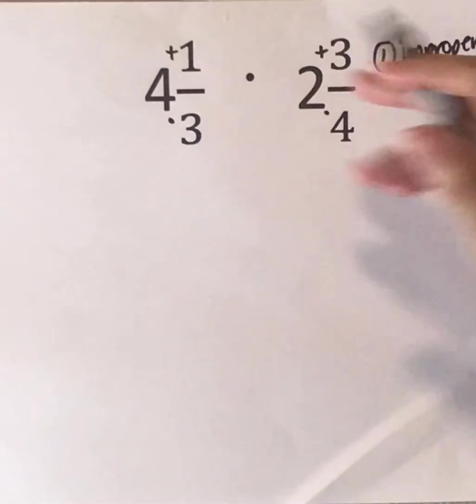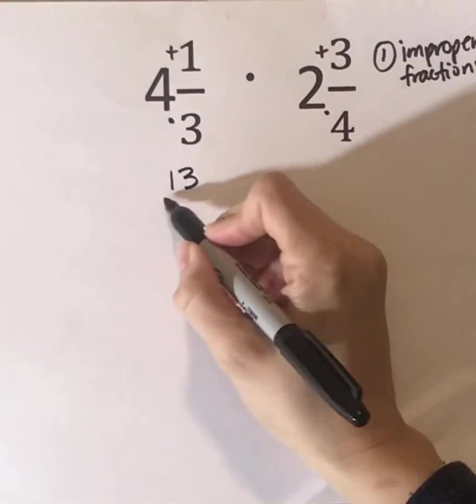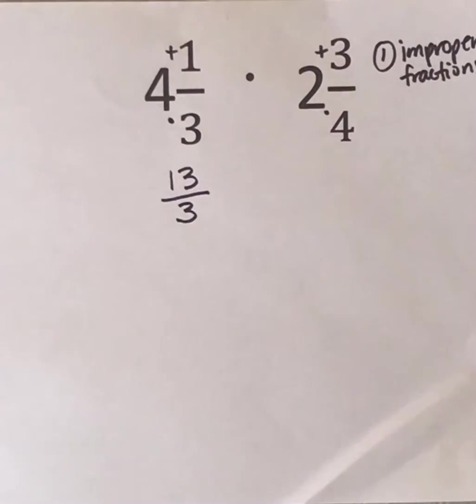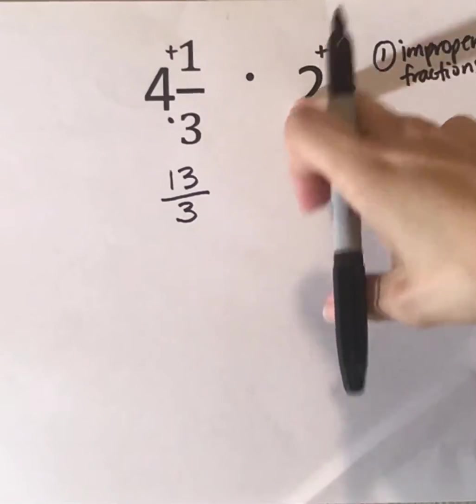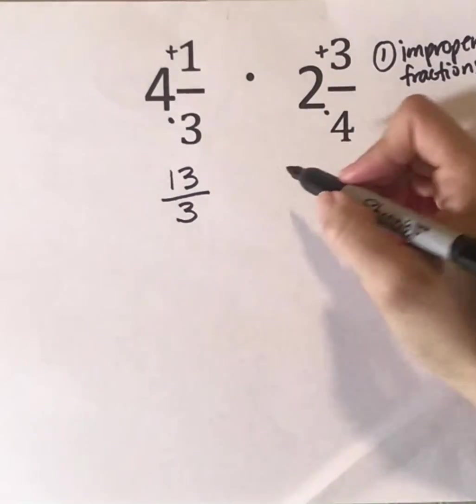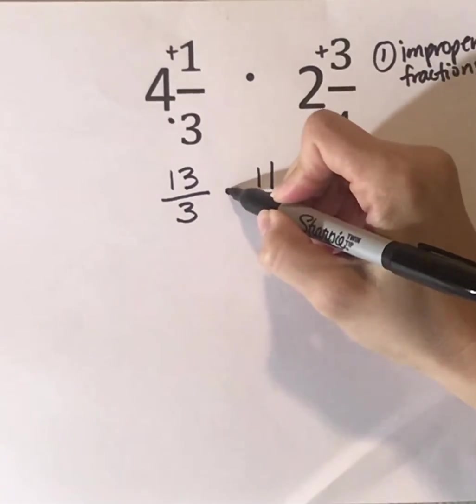So 3 times 4 is 12, plus 1 is 13. The denominator always stays the same. So that becomes the improper fraction. Next, same thing here, we're going to do 4 times 2 is 8, plus 3 is 11 over 4. And then bring your sign down.